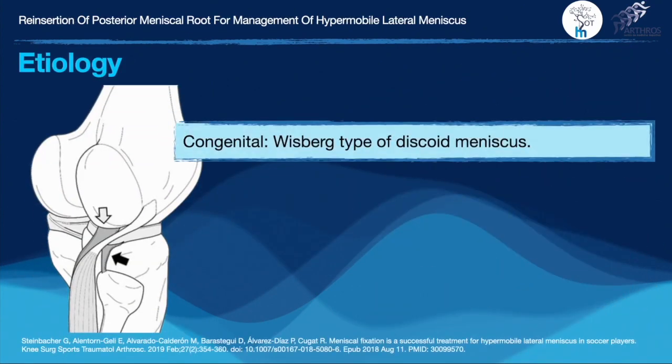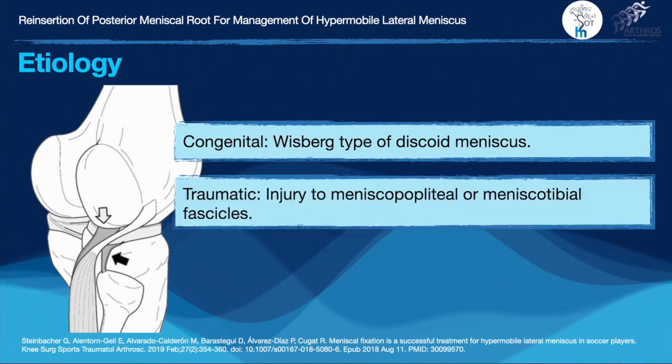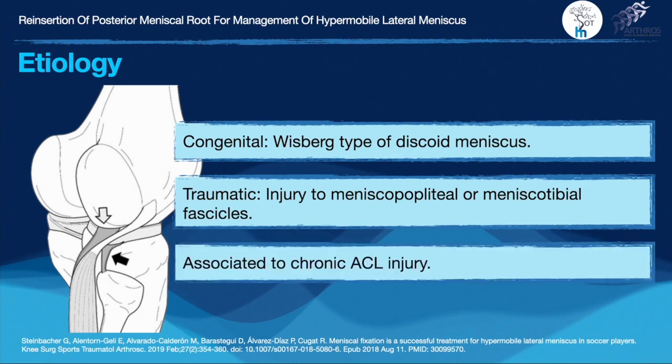It has multiple etiologies such as congenital and Wrisberg-type discoid meniscus, traumatic because of the disruption of the stabilizer structures, or can be associated with a chronic axial injury.